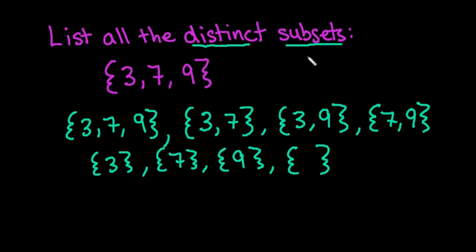So a good rule of thumb is to look at however many elements you have and take 2 to the nth power—2 to the number of elements that you have—to make sure that you have all of them. So we ended up with 8 total subsets, so we know that we have everything listed.